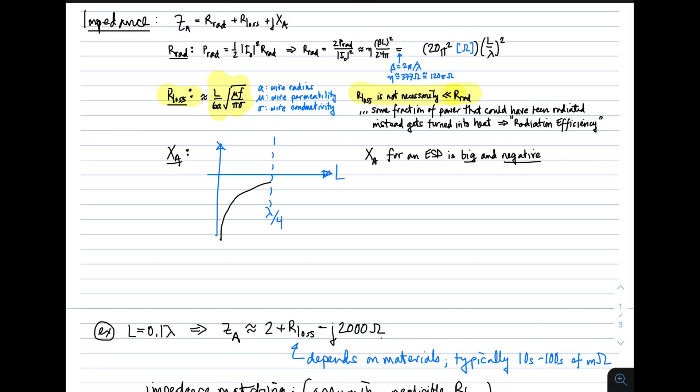The loss resistance is not necessarily much, much less than the radiation resistance. In other words, you can't necessarily ignore it. Not because the loss resistance is big, but because this expression, you will see, gives you pretty small values of radiation resistance, maybe just a few ohms. So, if the loss resistance is tens of milliohms or hundreds of milliohms, then the loss resistance is going to be important.